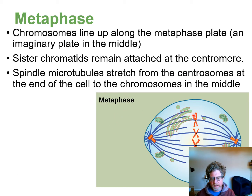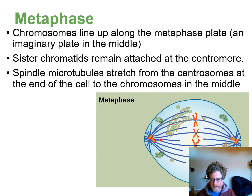Metaphase: meta means middle, so the chromosomes line up in the middle, pushed and pulled there by the spindle fibers — the microtubules that have attached to the centromere. The structures at each end are called centrosomes, and the microtubules organize themselves along the centrosomes. These are what push and pull the chromosomes apart.